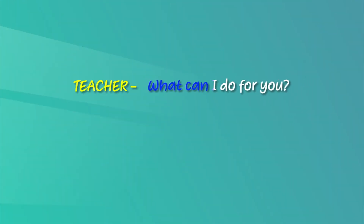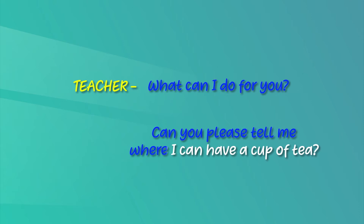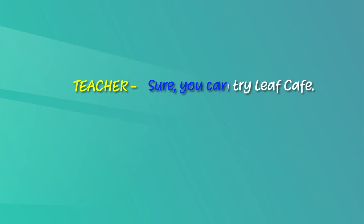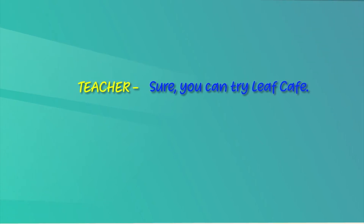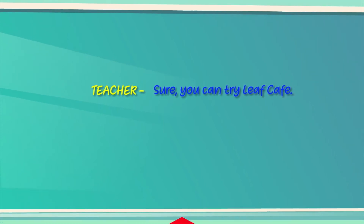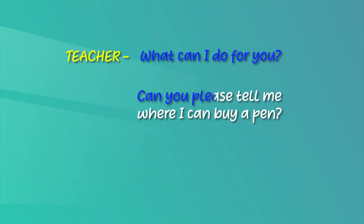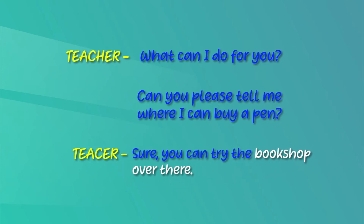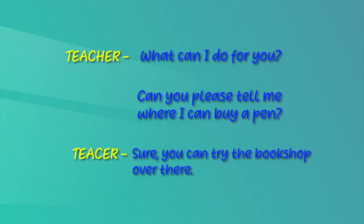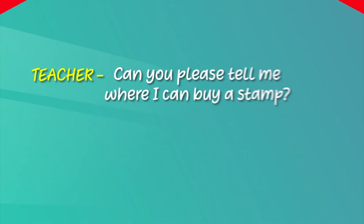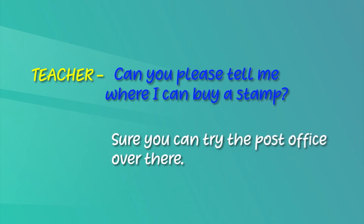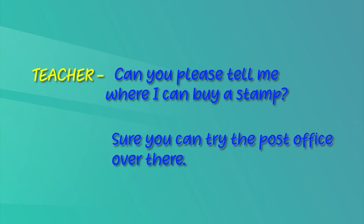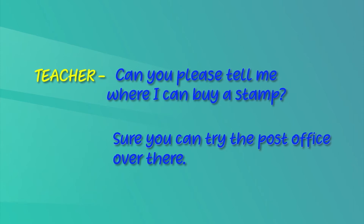Now let's see how you can practice this. When I ask the question, I want you to answer. What can I do for you? Sure, you can try Leaf Cafe. Now let's try another situation — this time you want to buy a pen. What can I do for you? Sure, you can try the bookshop over there. Now how would you offer to help someone who wants to buy a stamp? Can you please tell me where I can buy a stamp? Very good — this is how you offer to help and give information.